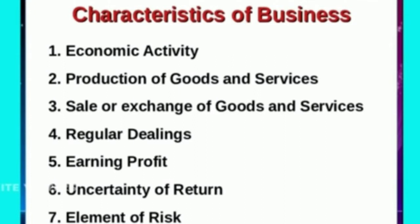Hi students. From the definition of business we can find out seven characteristics of business: dealings of goods and services, it may be produced or procured, the object or purpose is to earn profit, and its return may be uncertain. There may be profit or loss and there is also an element of risk involved in business. Business refers to those economic activities which are connected with the production or purchase and sale of goods or supply of services with the main object of earning profit.